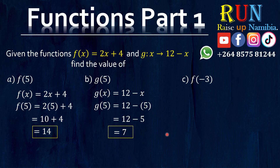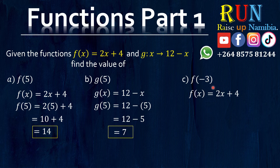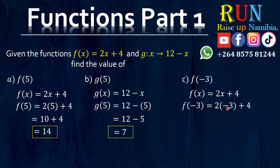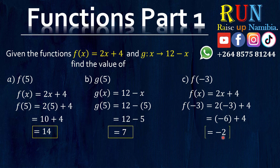How about for C? For C, we use this function and we just substitute negative 3 wherever there is X. Just remember to always put it into brackets. So we say 2 multiplied by negative 3 will give us negative 6. Now negative 6 plus 4 is equals to negative 2. And that's your final answer. Easy, isn't it?